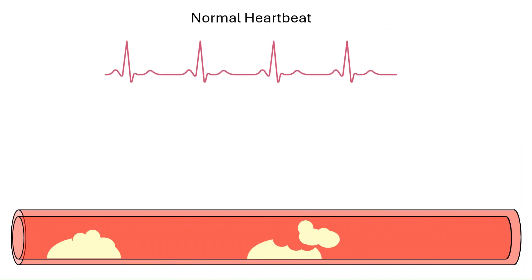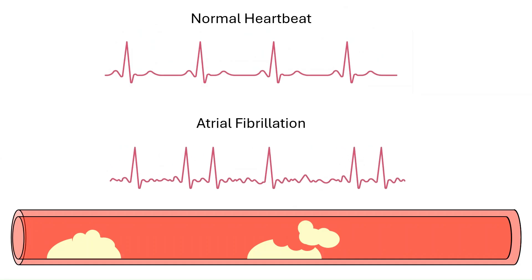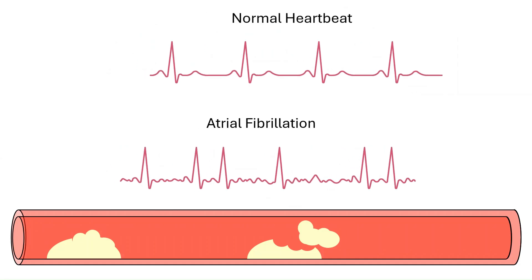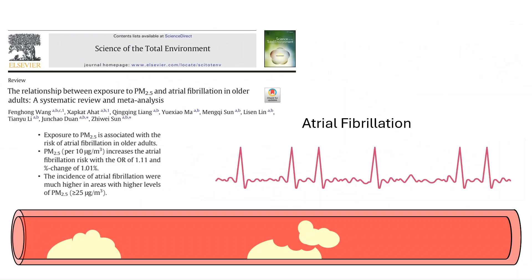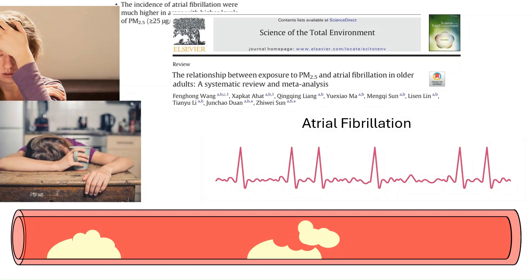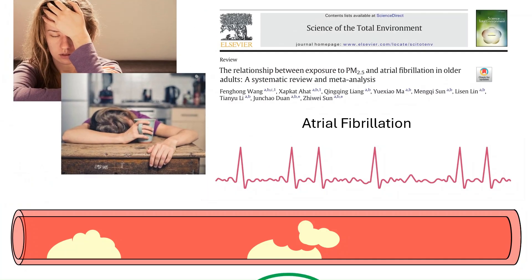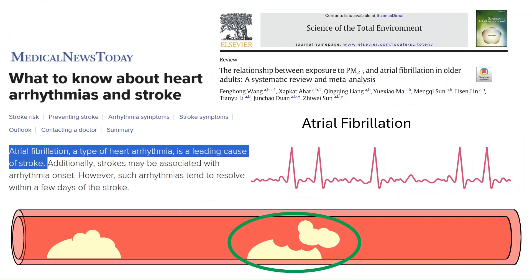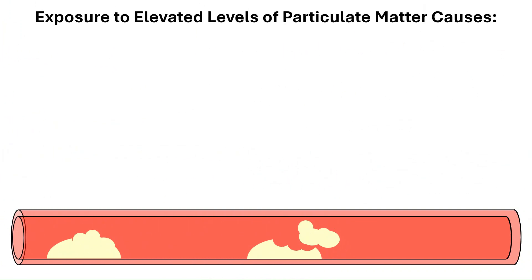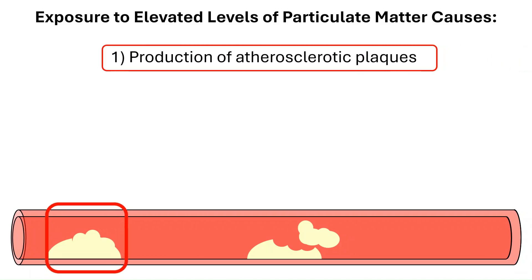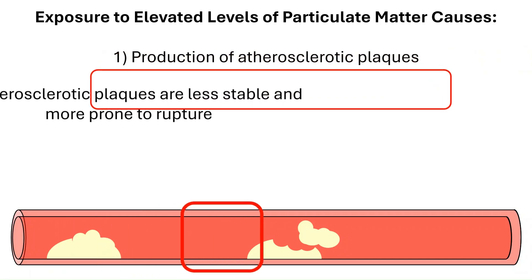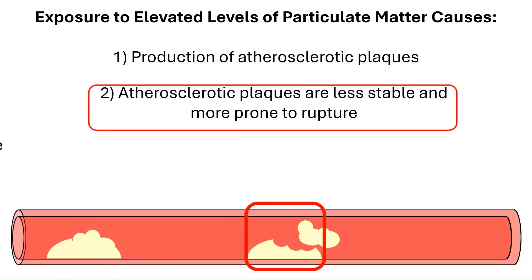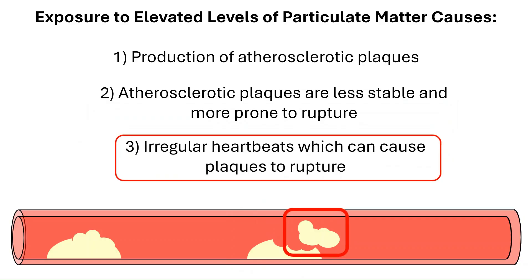Inhalation of elevated levels of particulate air pollution will also affect your heartbeat. Not only will the heart rate potentially change, but so will its rhythm. Atrial fibrillation is a form of arrhythmia — when the heart beats irregularly. This can cause fatigue or lightheadedness, and it can also cause the plaques in your arteries to rupture. Collectively, all of this means that exposure to elevated levels of particulate air pollution not only leads to the production of more plaques in one's arteries, but these plaques are less stable. Added to that, air pollution causes one's heartbeat to change in a way that increases the likelihood of these plaques to rupture.